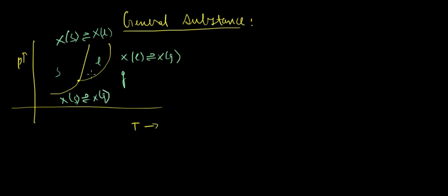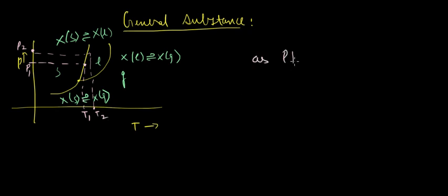If we look at the graph, suppose this was P1, which is the freezing point at temperature T1. If we increase the pressure, the temperature also increases. So we can say that as pressure increases, the freezing point also increases — unlike the case of water, where freezing point decreases with increasing pressure.